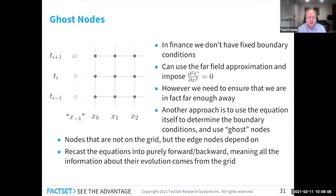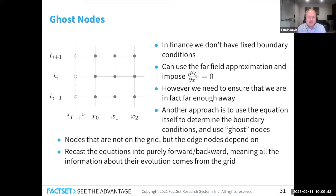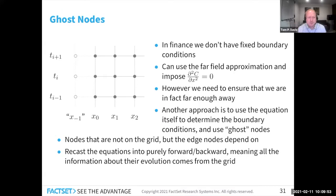Another approach is to use the equation itself to determine the boundary conditions — i.e., enforce the free boundary condition — and use ghost nodes. A ghost node is a node that doesn't actually live on the grid, but you carry along all its information and do the propagation. The edge nodes depend on that ghost node. You flip around the derivatives so they are all either forward or all backward, meaning all propagation of ghost nodes uses on-grid information. In that way the PDE equation itself — the Black-Scholes PDE — gives you the boundary conditions without imposing the second-derivative-equals-zero approximation.